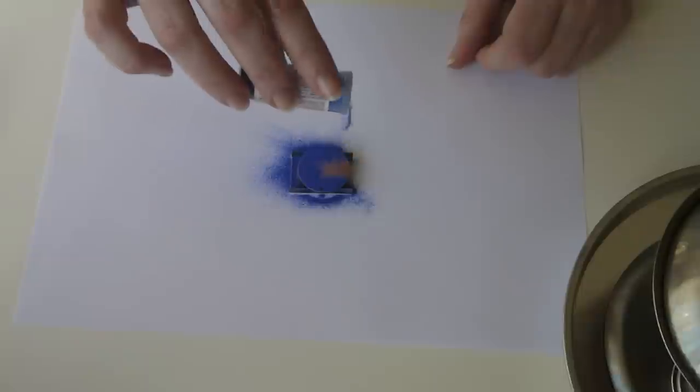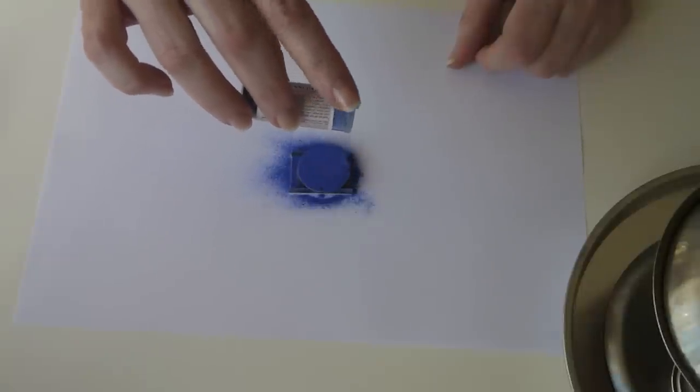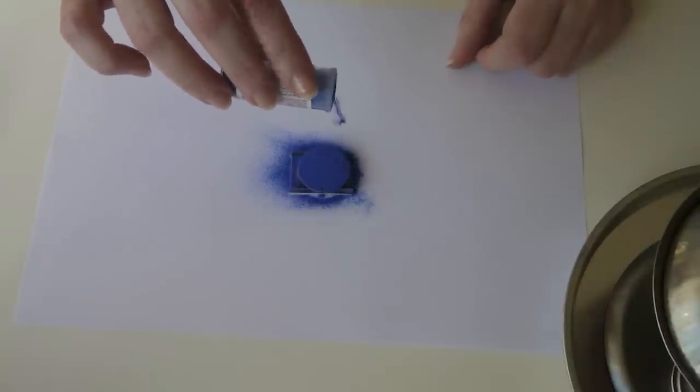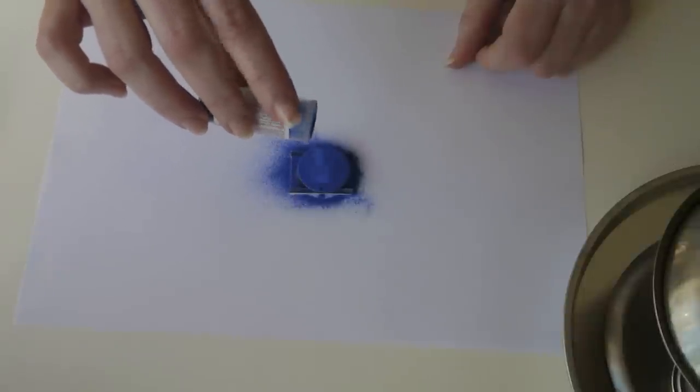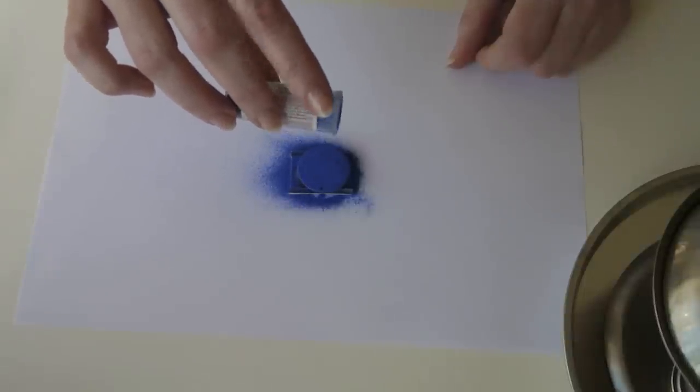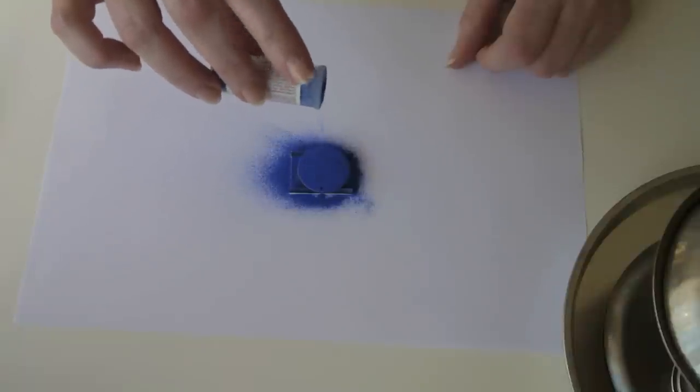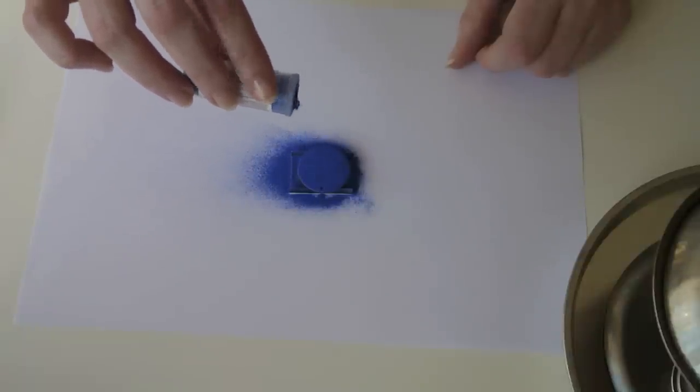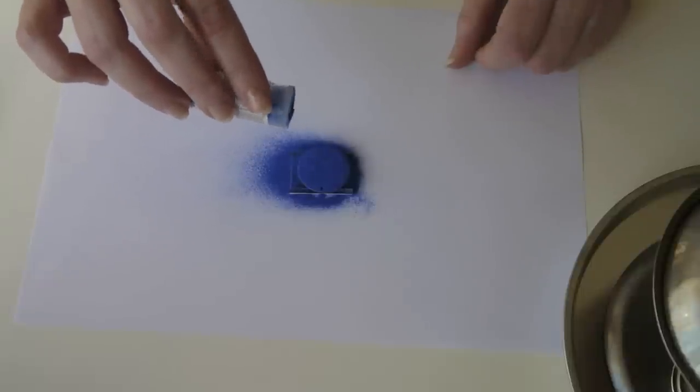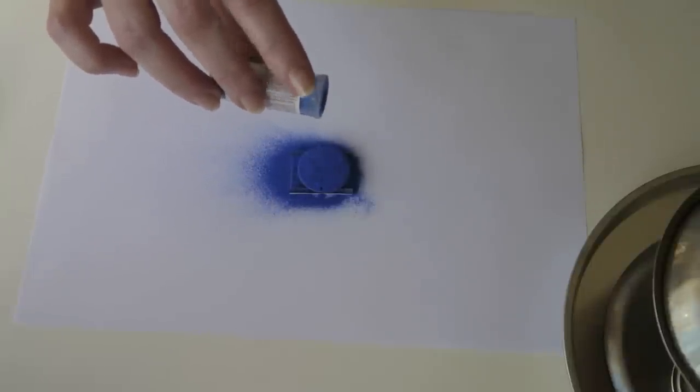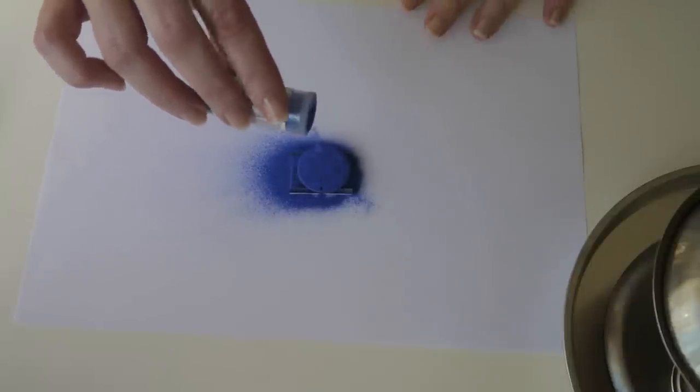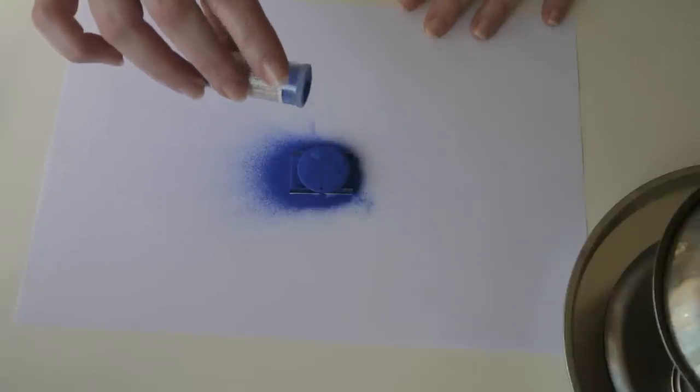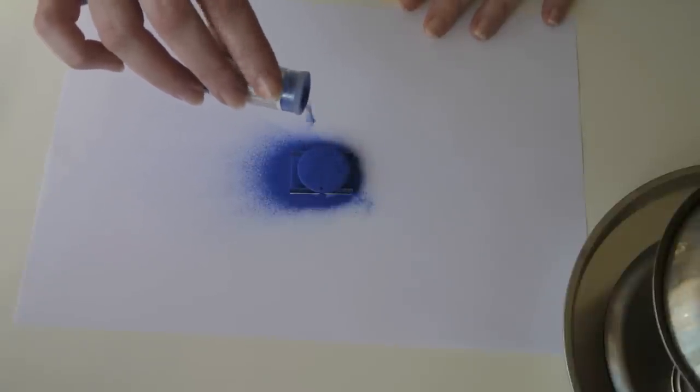The most common mistake people make when they first start out is they don't put enough on. You want to make sure that there's no copper shining through. A good thick coat of powder will give you a lovely glossy finish. Don't worry if it does get a little bit lumpy. The longer you leave it on the stove, the smoother it will get. But do try to put it on as evenly as possible.